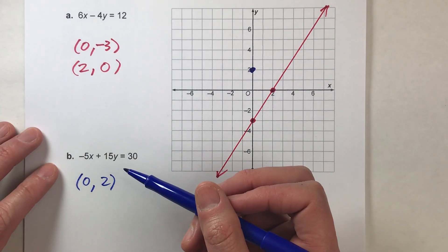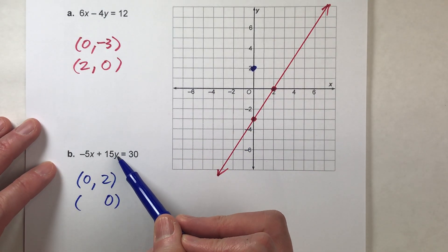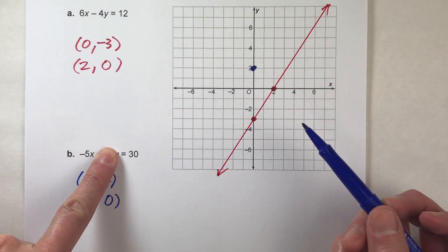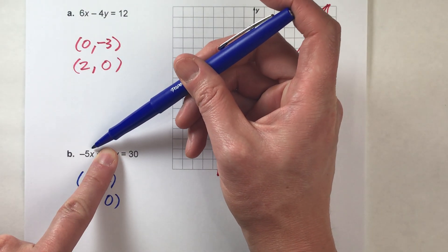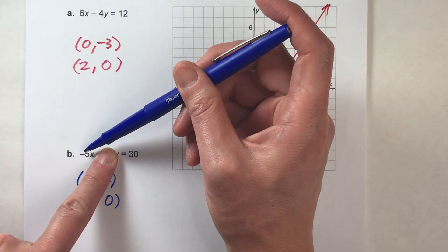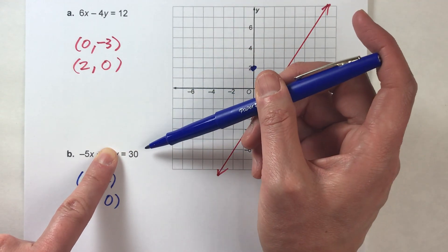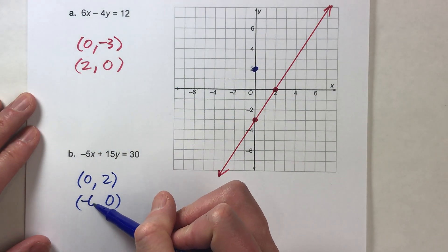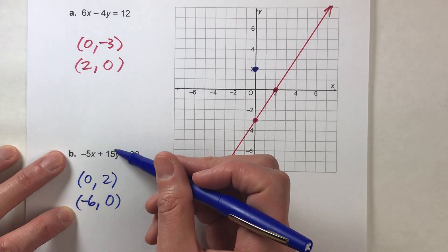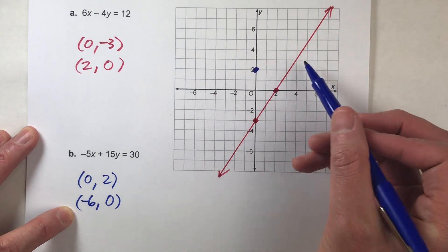Now, let's find the other intercept. This time we'll make y zero. 15 times zero is zero, so we can basically ignore that because it's zero. So we're left with negative five times x equals 30. So what does x have to be? Negative five times what equals positive 30? Negative five times negative six equals positive 30. So now we have our second combination. Negative six and zero make this side of the equation equal 30. So we can plot this on our graph.